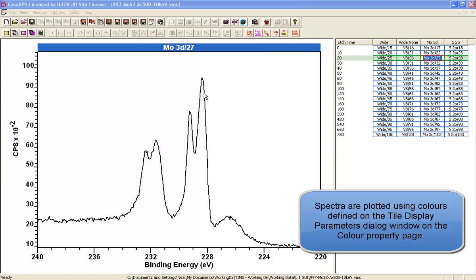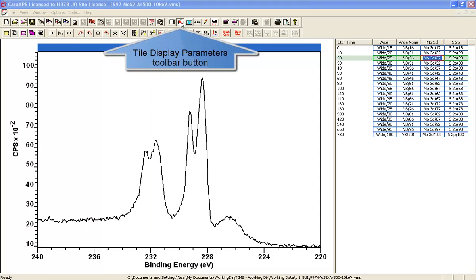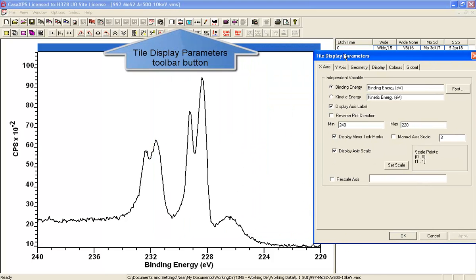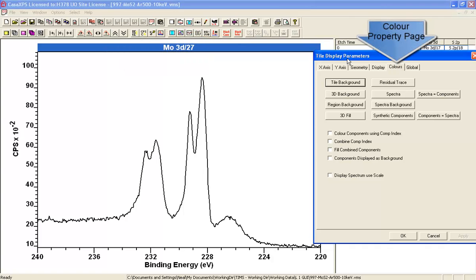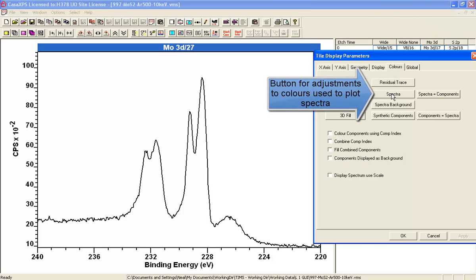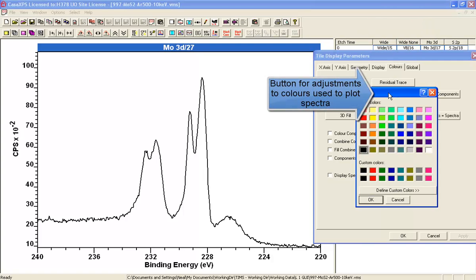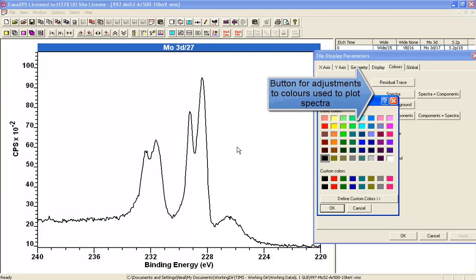The color used to display the spectrum in the active tile comes from the colors property page in the tile display parameters dialog window. On the colors property page, we have buttons that allow us to alter the colors used to plot the data.